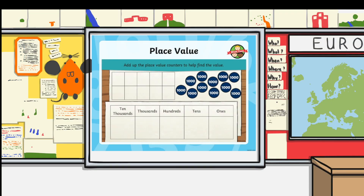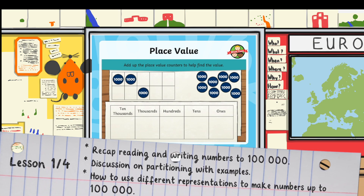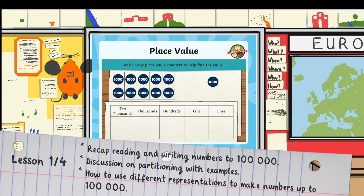Hi, it's Holly from Twinkle and in this Twinkle Teachers video we'll be looking at place value. Let's see how many thousands we have. There's 10 already and we know that 1,000 times 10 is 10,000. So I'm going to put one 10,000 counter in the grid and my last thousand can go in the thousands column.